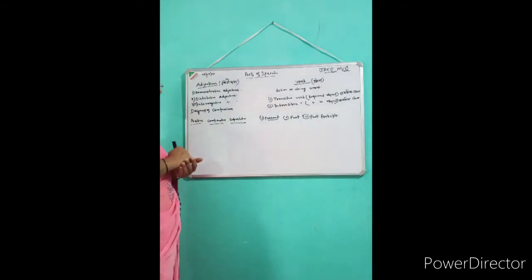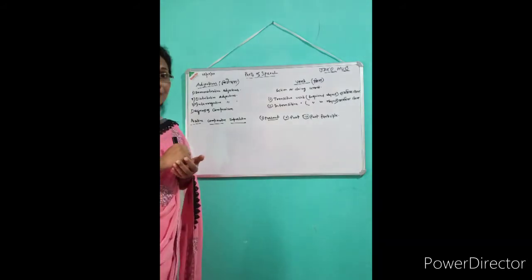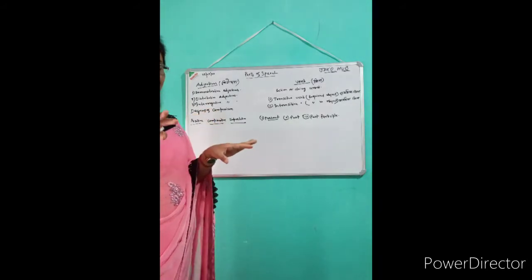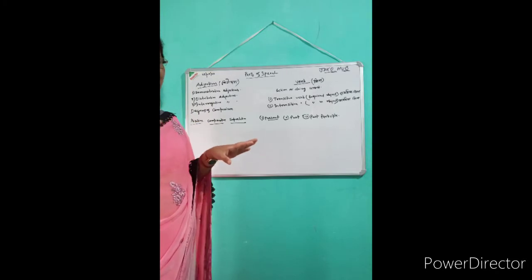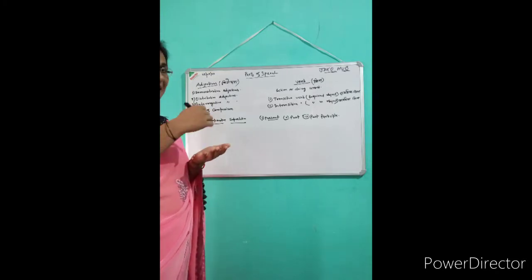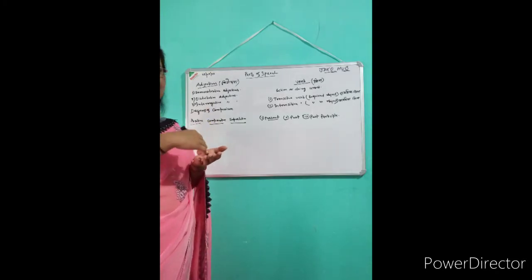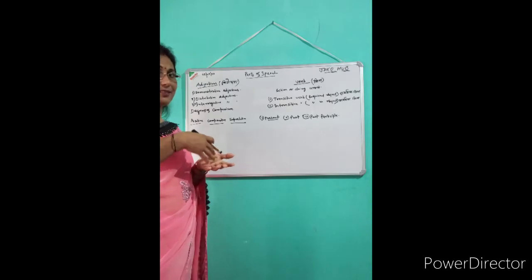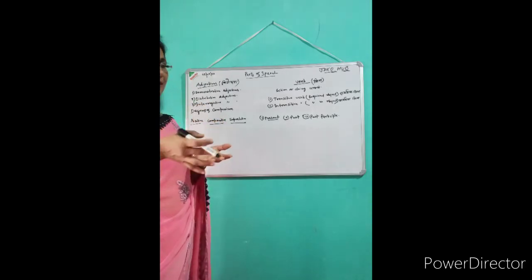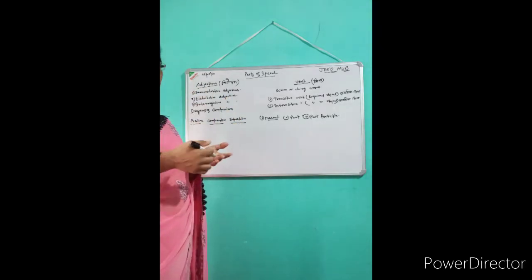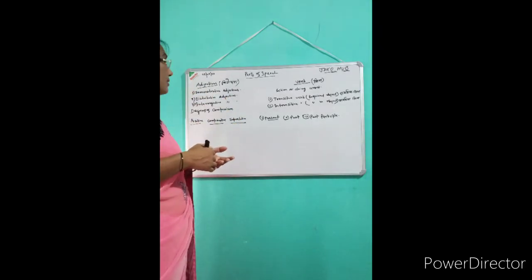Distributive adjective — what is distributive adjective? Vitaran. जैसे each, every, either, neither. We shall discuss these things in future sentences.